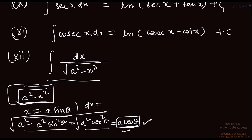Of course the dx part will also change. dx becomes a cos θ dθ, since a is constant and the differentiation of sin θ is cos θ dθ.